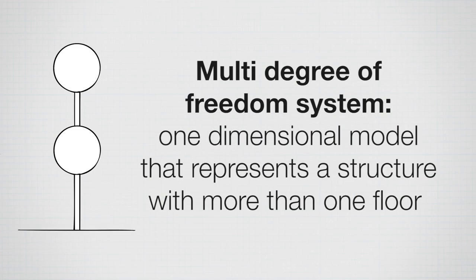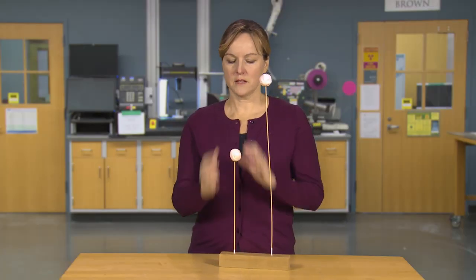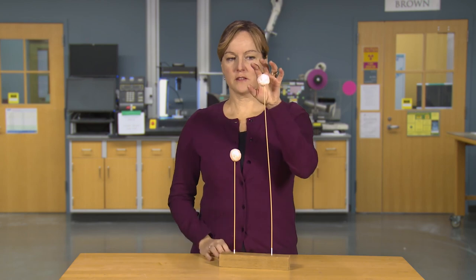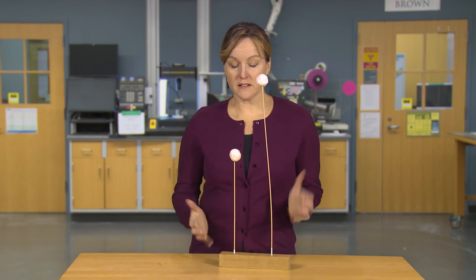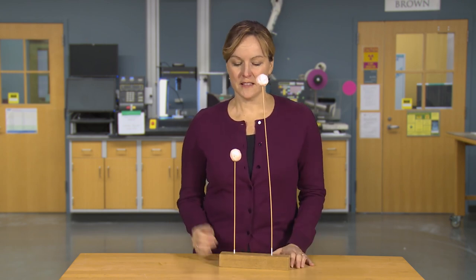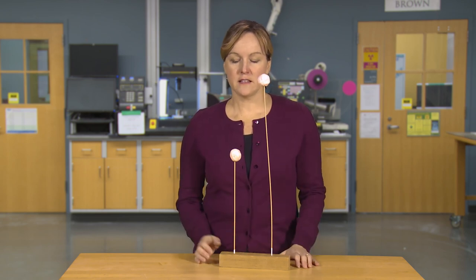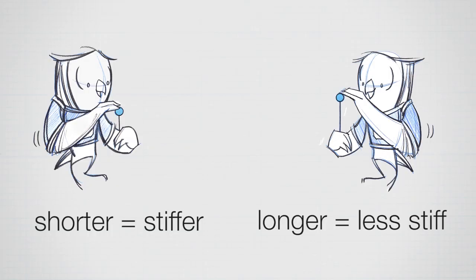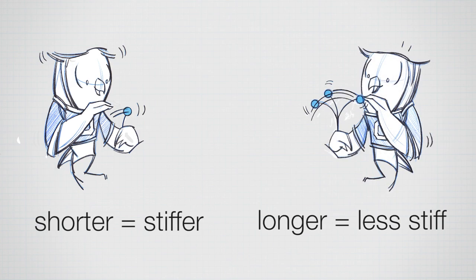A one-dimensional model of a building with multiple floors is called a multi-degree-of-freedom system. The single-degree-of-freedom models shown here represent one-story structures with everything collapsed along a single line. Two versions represent a taller and a shorter building. The different column heights represent different stiffnesses — how much displacement occurs for a given force. Applying the same force to both, one displaces more. The shorter one is the stiffer system compared to the taller, less stiff one.